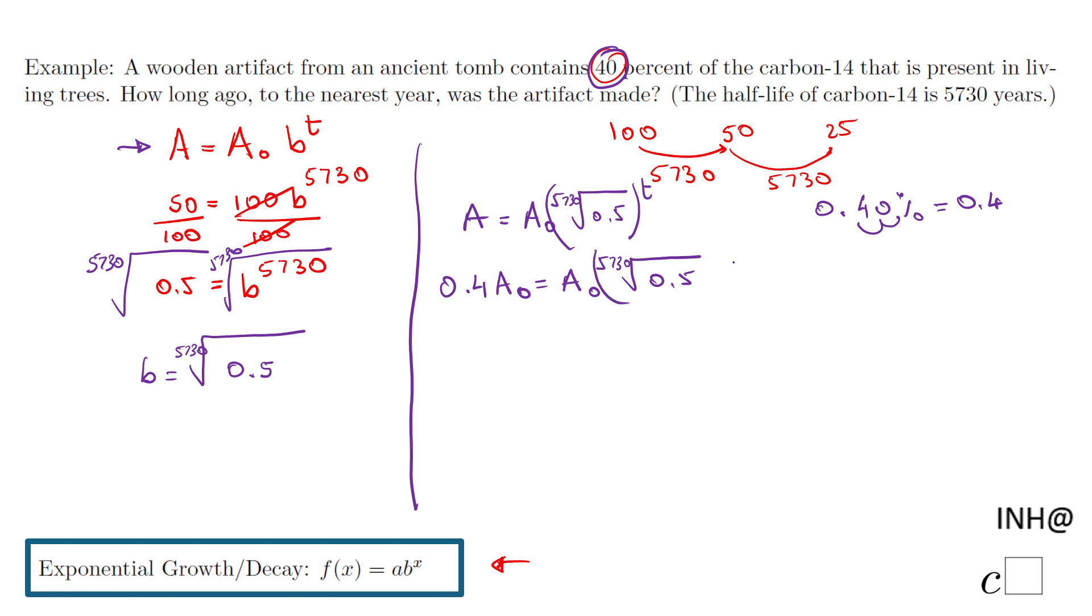t is the thing we want to find out here. What you can do very fast is cancel these initial quantities, and we have the equation: 0.4 = (5730th root of 0.5)^t.